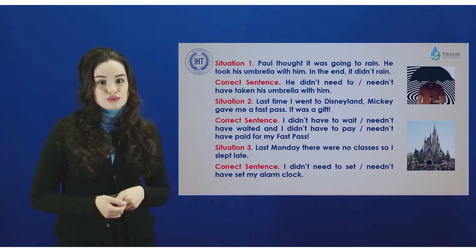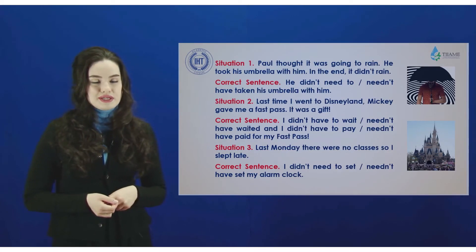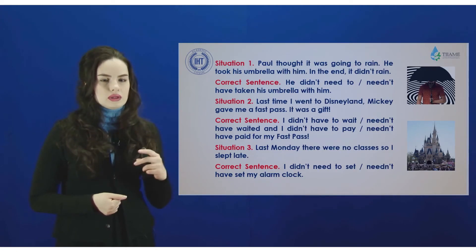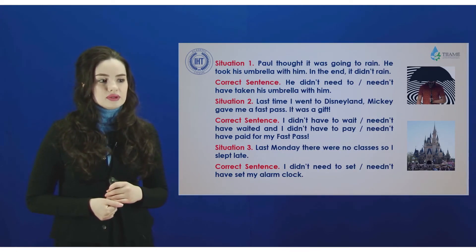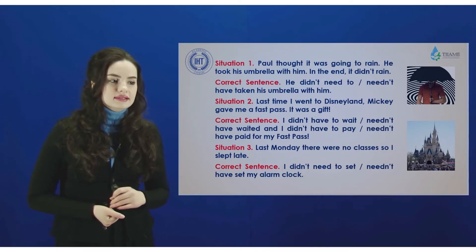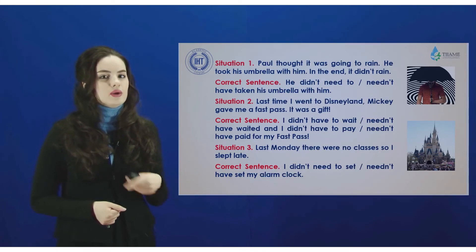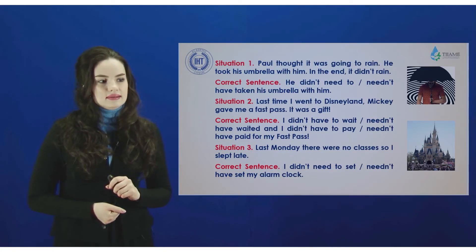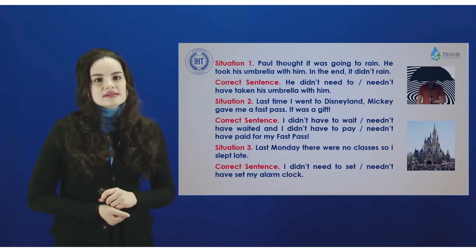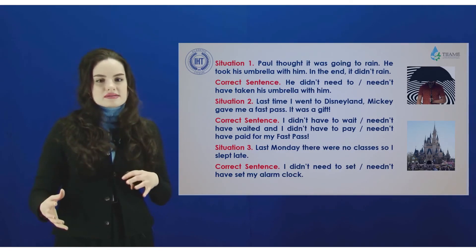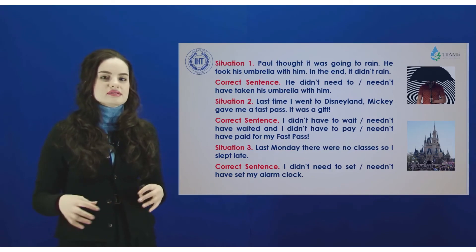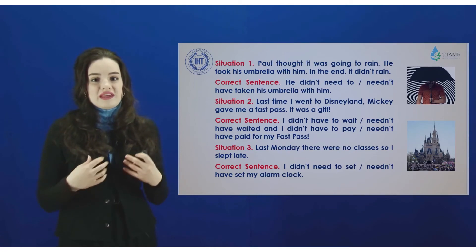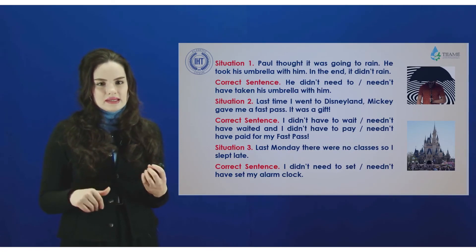Look at the correct sentences — examples you should follow in your speech and remember. 'I didn't have to wait or needn't have waited' and 'I didn't have to pay or needn't have paid.' It means that in the past we had some result — we can face that result, but nothing can be changed.